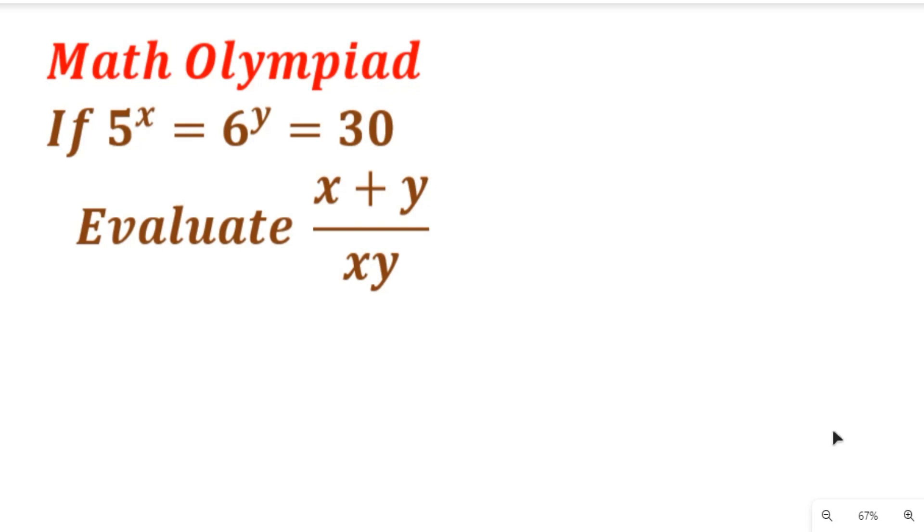Hello esteemed viewers, welcome to our math tutorial for today. In our math tutorial today, we are going to solve this Math Olympiad question that says if 5 to the power of x is equal to 6 to the power of y is equal to 30, evaluate x plus y divided by xy.